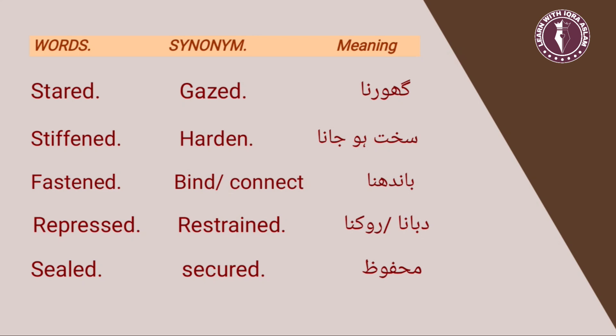The first word is 'stared.' Stared ka matlab hota hai ghoor na — musalsil kisi ko dekhna. Aur iska synonym hota hai 'gazed.' The second word is 'stiffened.' Stiffened ka matlab hota hai sakt ho jana ya akar jana, aur iska synonym hai 'harden.'